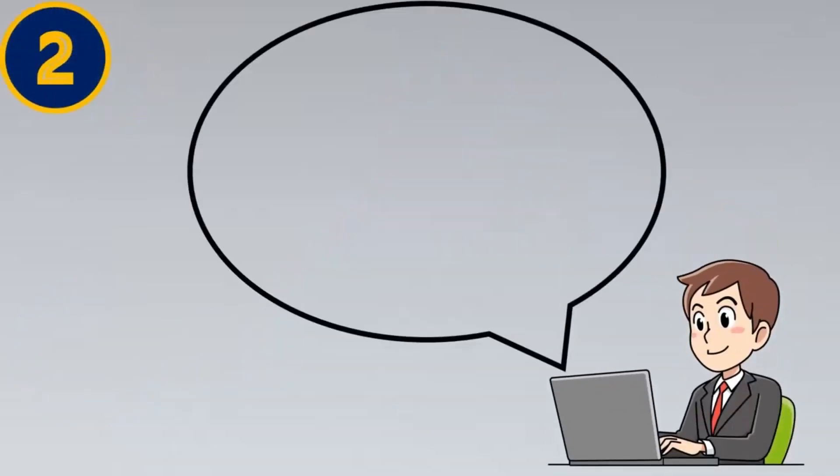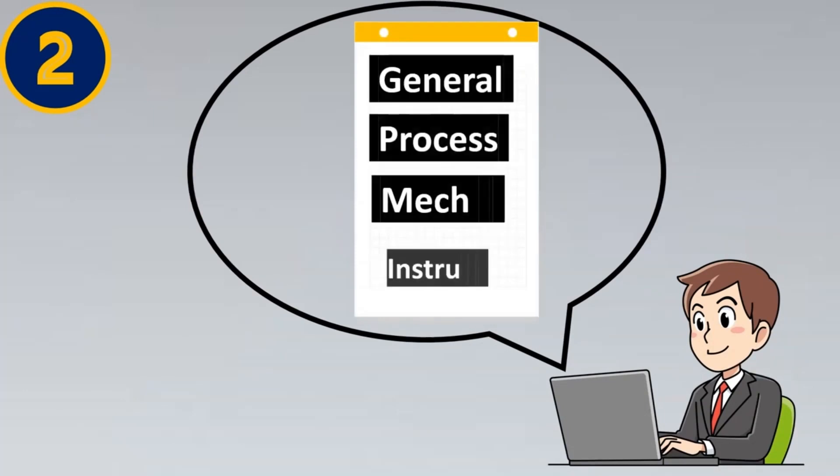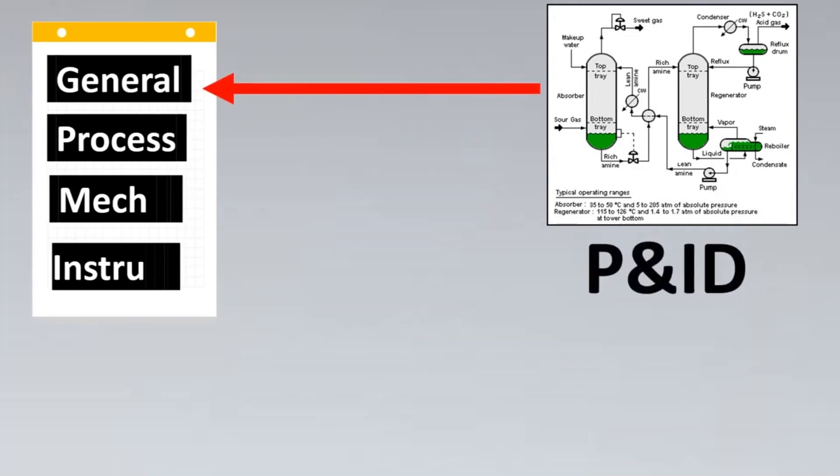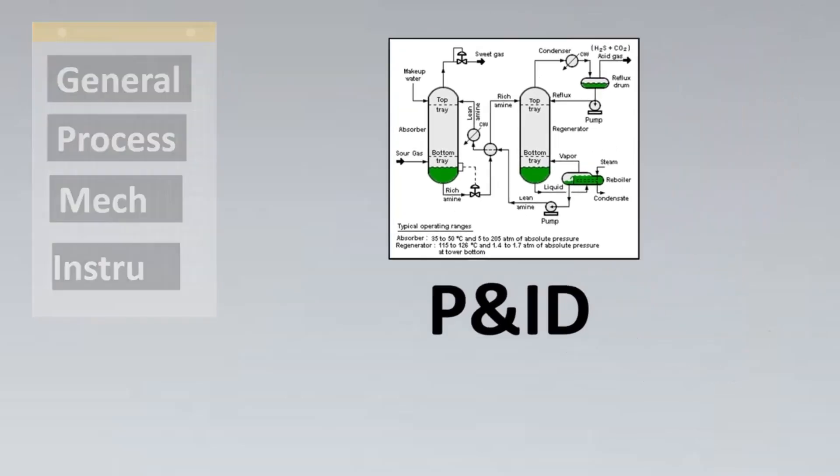The second step is to divide the data sheet. We'll divide our data sheet into four parts: the general part, process, mechanical, and instrumentation part. First we look into the general part. Here the input document, especially and predominantly, is the P&ID. But what in the P&ID is used to fill the general section?